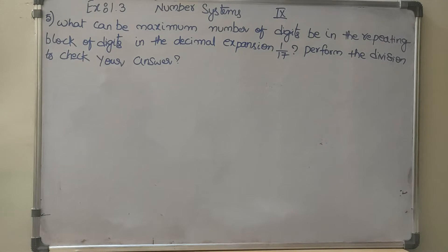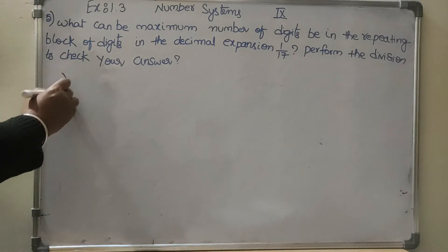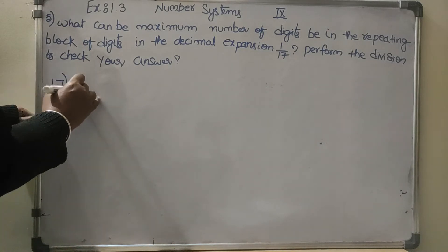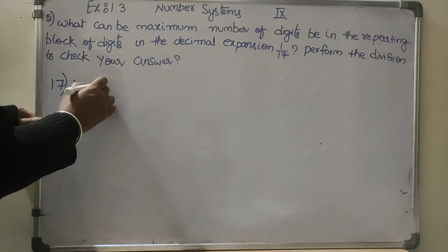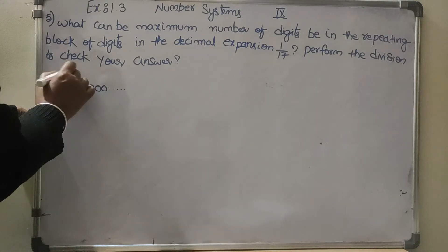In the decimal expansion of 1 by 17, perform the division to check your answer. So 17 is the denominator, 1 is the numerator. 17 will be the divisor and 1 will be here, 0.000 you can take.